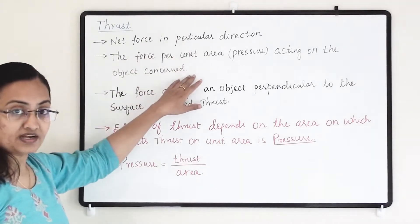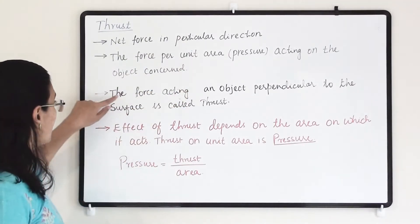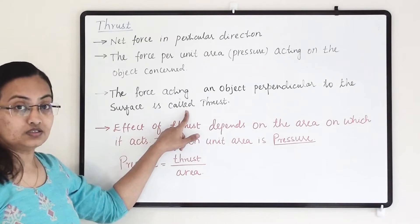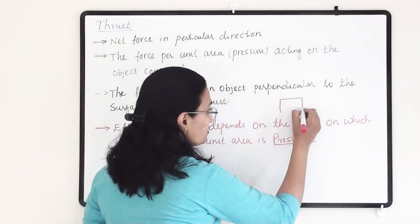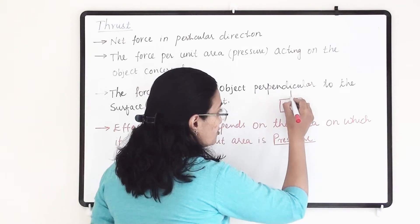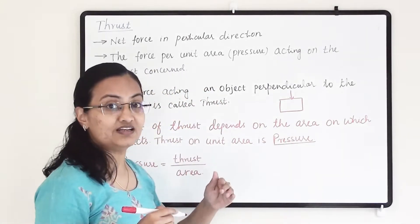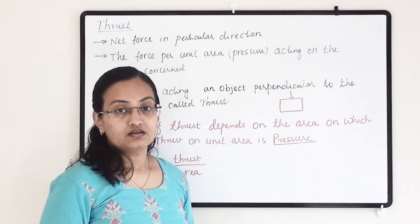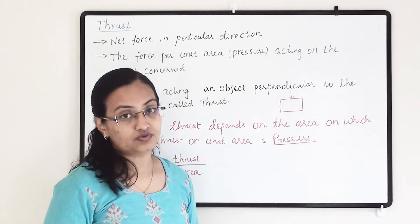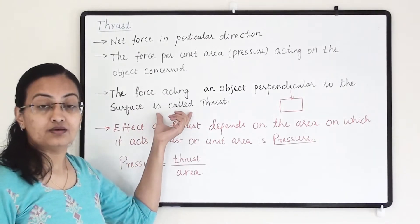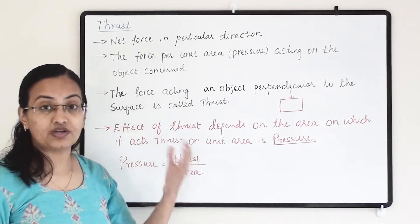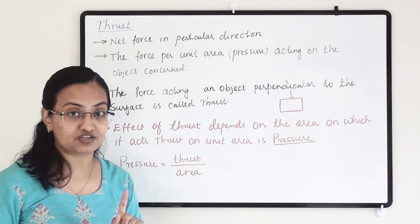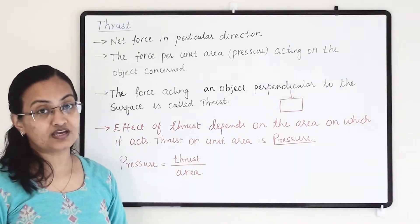Now with the help of these two points, let us derive what is thirst. The force acting on an object perpendicular to the surface is called thirst. For example, this is our box — we are applying pressure and that is perpendicular to that surface, then it is known as thirst. Gravitational force is towards downward, but the thirst direction is perpendicular. So whatever force we are applying on the object which is perpendicular to the surface or perpendicular to the area concerned, then it is known as thirst.